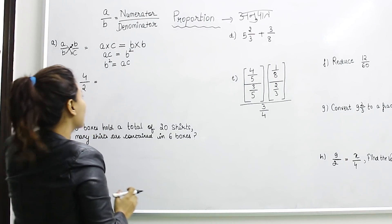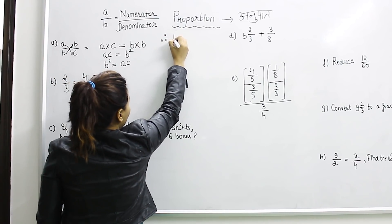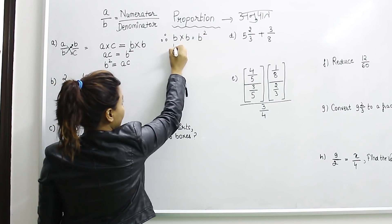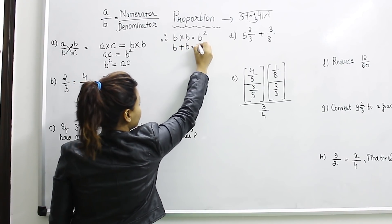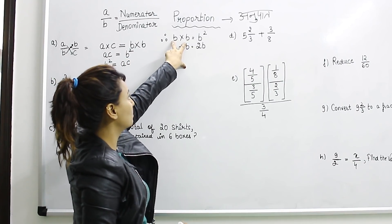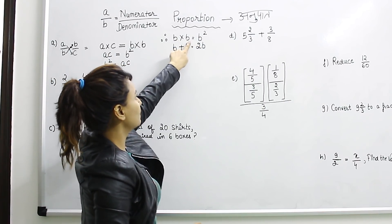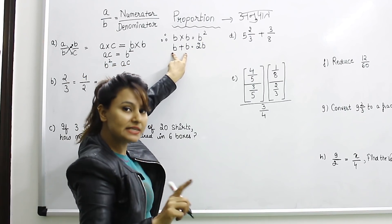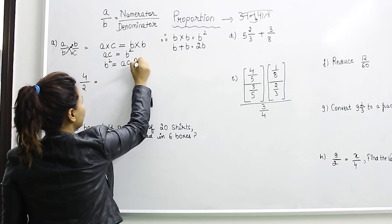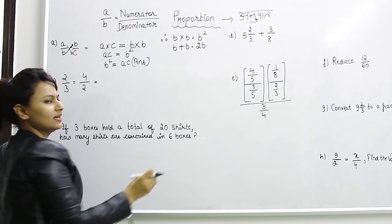B into B — keep this in mind — B multiplied by B is equal to B squared. Note the difference: B plus B is equal to 2B, but B multiplied by B is equal to B squared. So the answer is: AC is equal to B squared, or B squared is equal to AC.